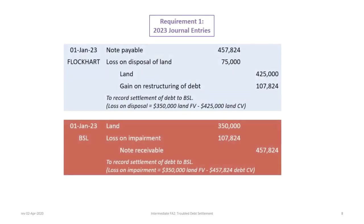Now we can proceed to the journal entries for BSL. In settlement of the note, BSL is going to accept land with a fair value of $350,000, so that's a debit to land. BSL credits the note receivable for the carrying value of $457,824 — we presume that both Flockhart and BSL are amortizing the note the same way. Then there is a debit necessary to make debits equal credits: a loss on impairment of $107,824. This impairment loss equals the carrying value of the debt less the fair value of the land being brought in.